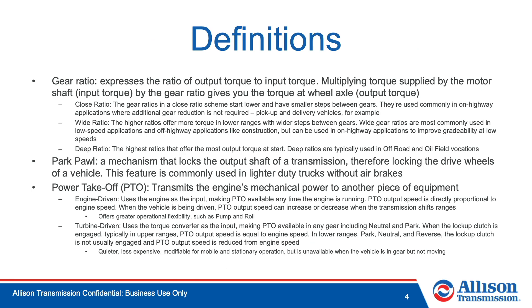Before we continue, let's define some of the terms used to discuss various features of an Allison transmission. A gear ratio expresses the ratio of output torque to input torque. Multiplying torque supplied by the motor shaft — input torque — by the gear ratio gives you torque at the wheel axle, or output torque. In a close ratio, the gear ratios start lower and have smaller steps between gears. They're used commonly in on-highway applications where additional gear reduction is not required, for example in pickup and delivery vehicles.